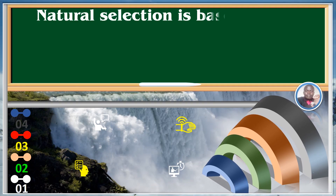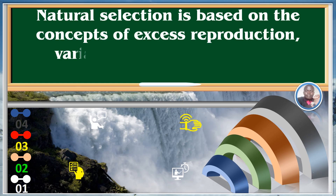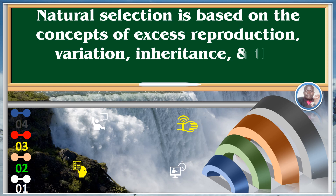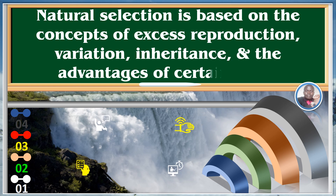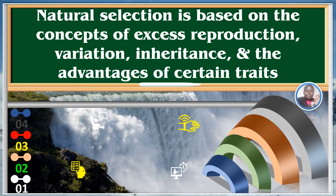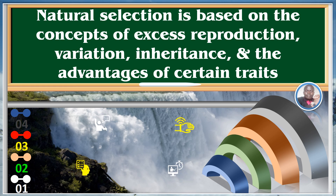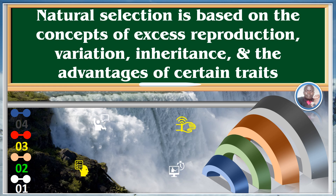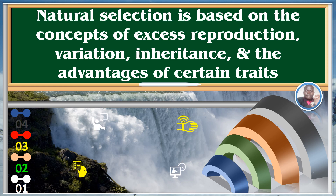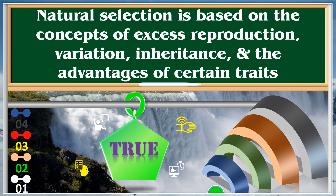Natural selection is based on the concepts of excess production, variation, inheritance, and advantages of certain traits. True.